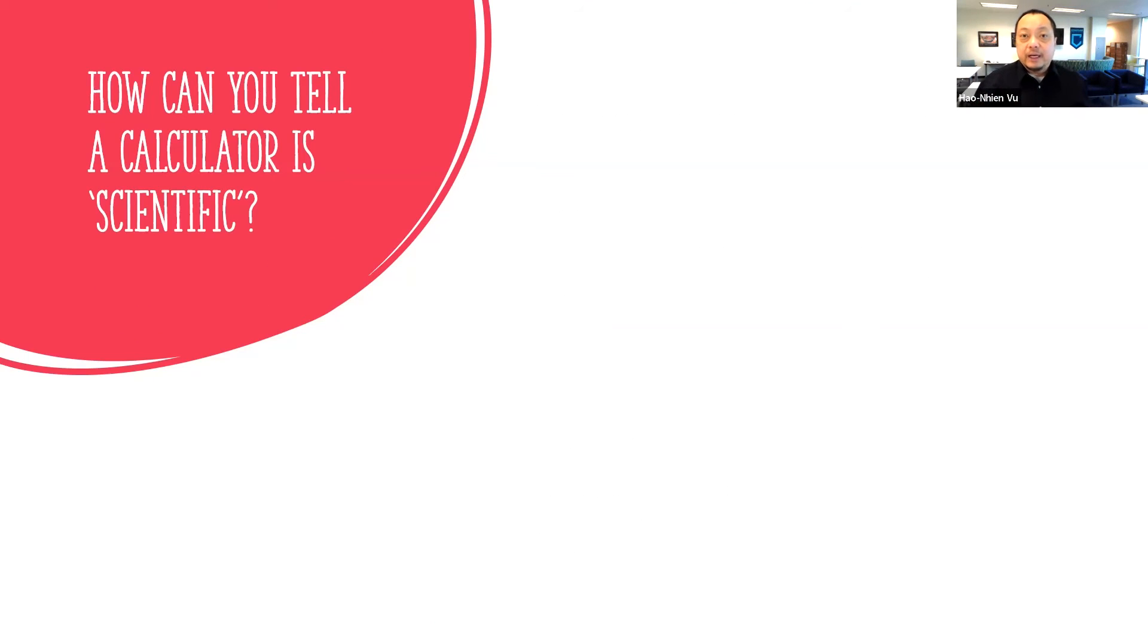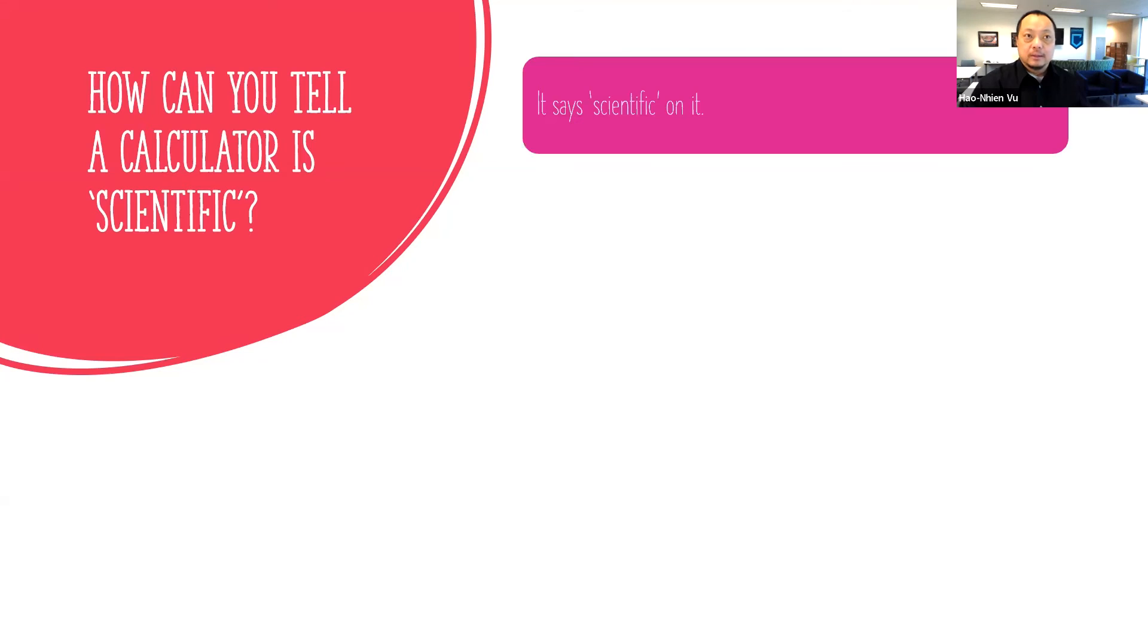Now if you don't have a scientific calculator you need to go get one. How can you tell that a calculator is scientific? The easiest indication is that it actually says scientific on it.